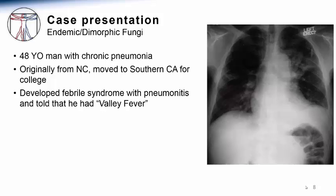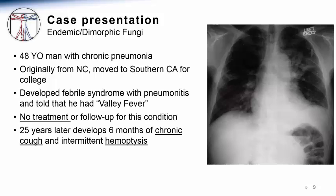I'm going to begin with a case of a 48-year-old man whom I cared for, who was originally from North Carolina but who had moved to Southern California for college. During college, he developed a prolonged febrile respiratory infection and the College Student Health Service told him that he had a condition known as Valley Fever. Since his infection resolved without treatment, he thought little of this for the next few decades until he began to develop a chronic cough, a bit of shortness of breath, and bloody sputum.